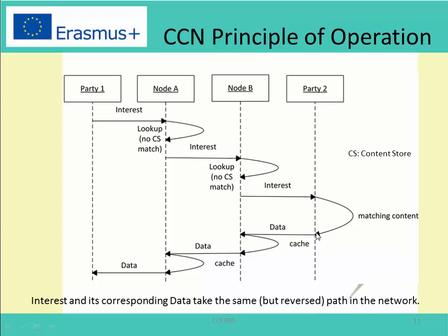The data will traverse node B, node A, and back to party one. At each intermediate node, like node B and node A, the data will be cached in the content store. That is the basic principle of operation in CCN. One important thing is that the interest and its corresponding data always take the same but reverse path in the network.